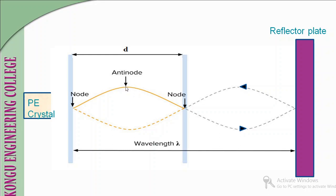Let us consider the distance between two consecutive nodes as d. We need to find the value of d to determine the velocity of the ultrasonic waves. To determine d, we need to move the reflector plate towards a node. We can know whether the reflector plate is at a nodal or antinodal position by the deflection of the ammeter in the frequency generator.